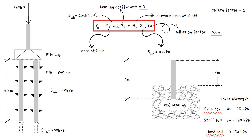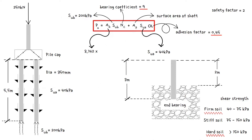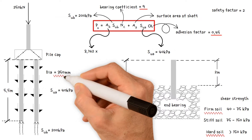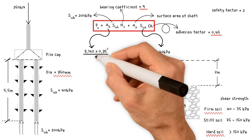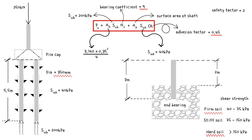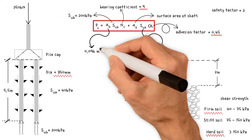In this calculation, we will use the parameters: NC = 9 (bearing coefficient) and Alpha = 0.45 (adhesion factor). To work out the ultimate pile capacity, first we need to calculate the area of the base, which equals π × (350 mm ÷ 1000)² ÷ 4. This gives a value of 0.096 m².